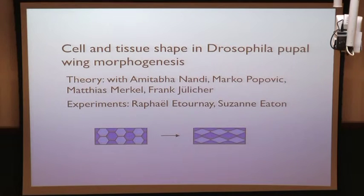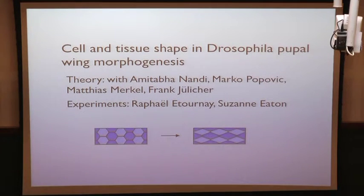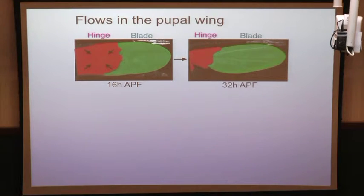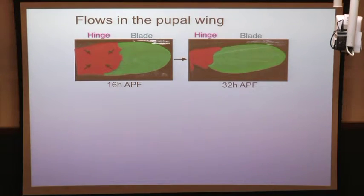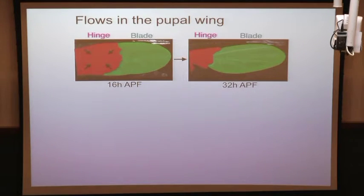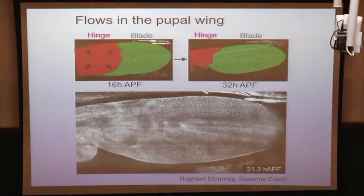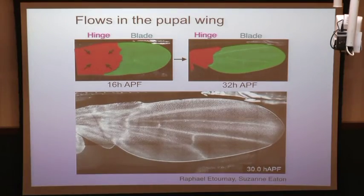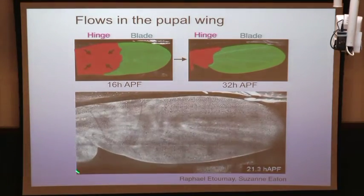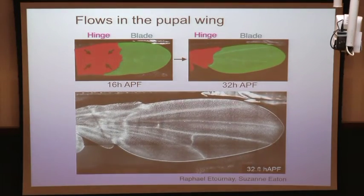To answer these questions, we worked in collaboration with Franck Julicher and Susan Hinton. Amitaba Marko and Mathias were the PhD and postdocs supervised with Franck, and Raphael Etourney did all the experiments I'm going to show. The experimental system is the pupal wing. This shows the evolution during the 16 hours of morphogenesis. The wing is made of two tissues, the hinge and the blade. Over these 16 hours, it deforms from a roughly rectangular shape into a final shape resembling the actual adult wing. This involves massive cellular flows, with a big region of cell contraction on the left and tissue elongation on the right.